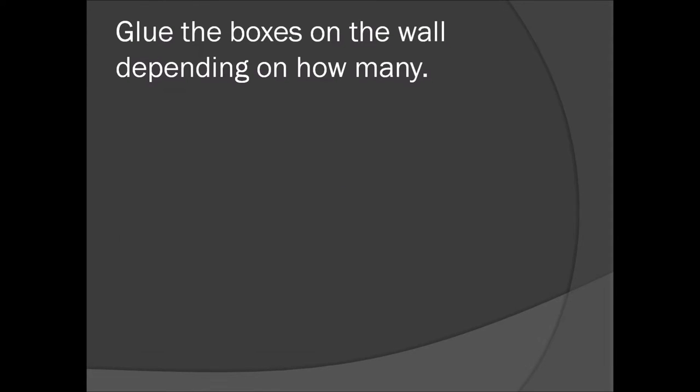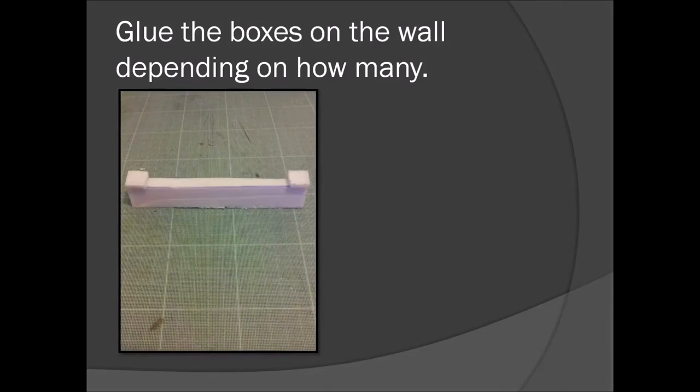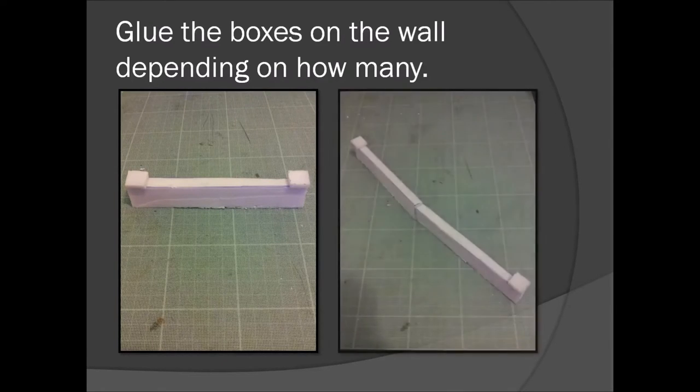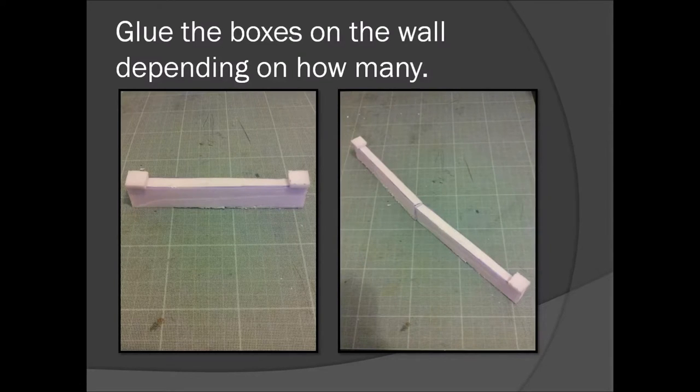Glue the boxes on the wall depending on how many. So like I said, if you're only doing one wall then glue one on each side. Or if you're doing many walls, glue them like this, for example.